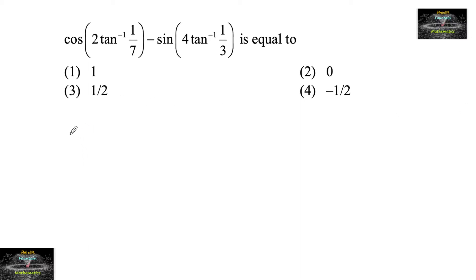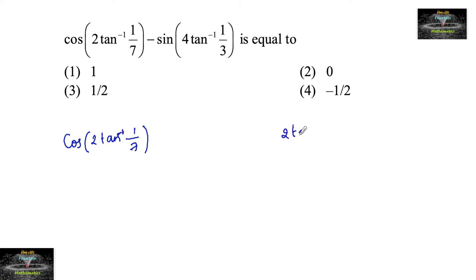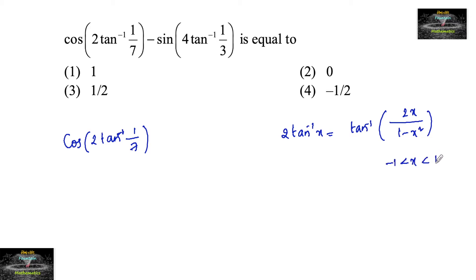Evaluate cos(2·tan⁻¹(1/7)) minus sin(4·tan⁻¹(1/3)). We know that 2·tan⁻¹(x) equals tan⁻¹(2x/(1−x²)), for x lying between −1 and +1.